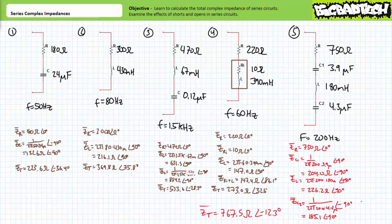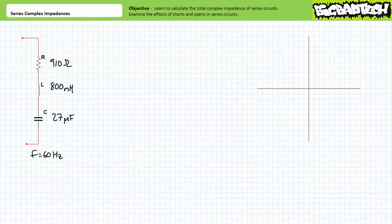Hopefully you did well on that example set. Pause the lecture and check these answers and correct any mistakes you may have made. Let's close out this lecture with a quick discussion of shorts and opens inside series AC circuits. Recall from our earlier discussion on shorts and opens inside series DC circuits that they can dramatically alter the total resistance of a series relationship. Series AC circuits behave no differently — only the terminology is subtly altered. Basically, take resistance and swap it out for the term impedance.